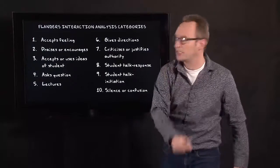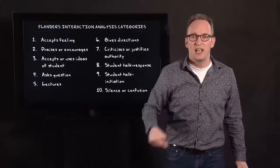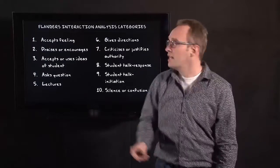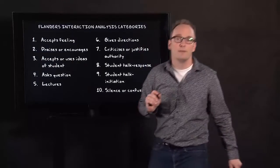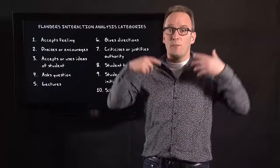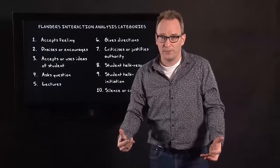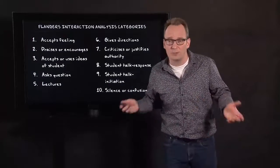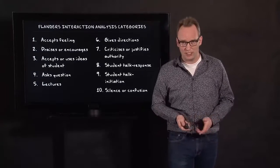So in order to observe specifically teacher-student interaction, you use these codes. So if a teacher gives direction, you use code 6. If the teacher uses some ideas of his or her students, then you say it's a 3. And so you use this system while in the field and directly use these numbers. And there are other types of systems of structured observation as well.